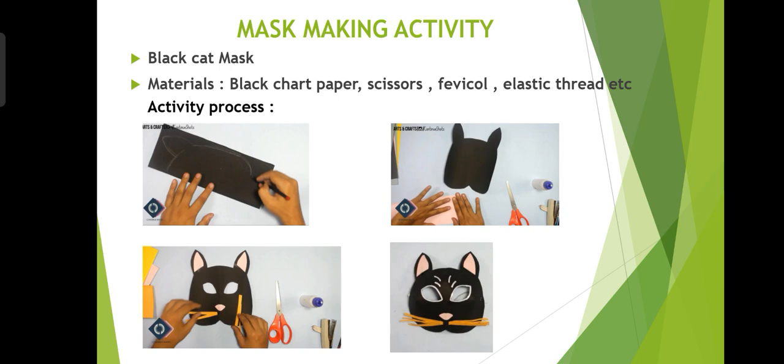The first activity is mask making. We prepare a black cat mask. Materials required: black chart paper, scissors, Fevicol, and elastic thread. Activity process: take a black paper, draw the outline of a black cat, then cut the paper as shown in the picture. The children will be able to prepare the black cat mask using these materials.